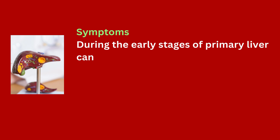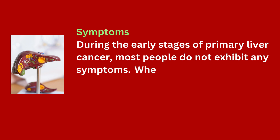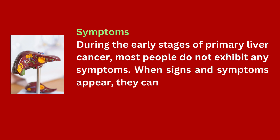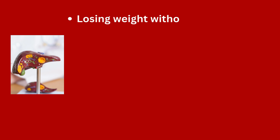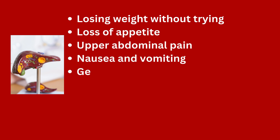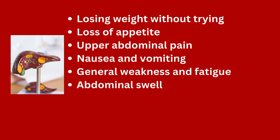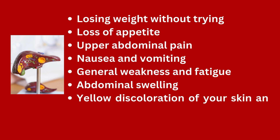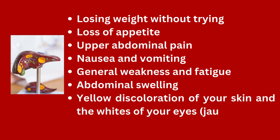During the early stages of primary liver cancer, most people do not exhibit any symptoms. When signs and symptoms do appear, they can include: losing weight without trying, loss of appetite, upper abdominal pain, nausea and vomiting, general weakness and fatigue, abdominal swelling, yellow discoloration of the skin and whites of the eyes (jaundice), and white chalky stools.